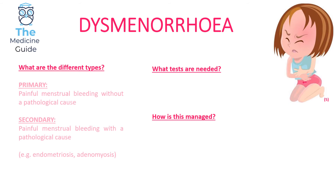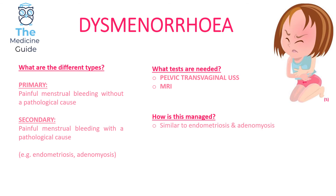Dysmenorrhea is next. There are different types: primary dysmenorrhea is painful menstrual bleeding without any true pathological cause, while secondary dysmenorrhea is painful menstrual bleeding with a pathological cause such as endometriosis or adenomyosis. In terms of tests, we do a pelvic transvaginal ultrasound scan and then an MRI for diagnostic uncertainty. The management follows a stepwise approach very similar to that of endometriosis and adenomyosis.